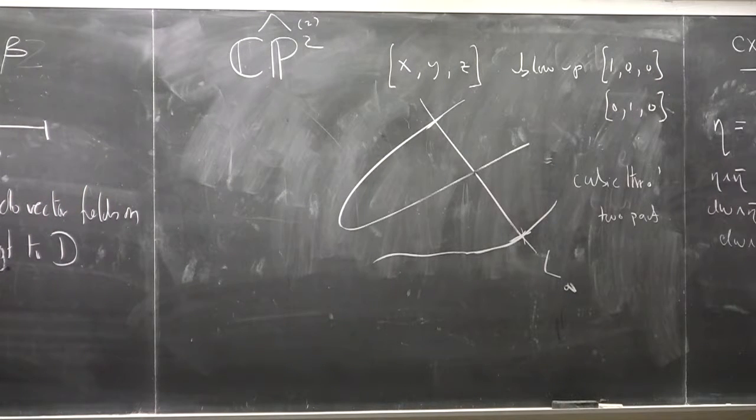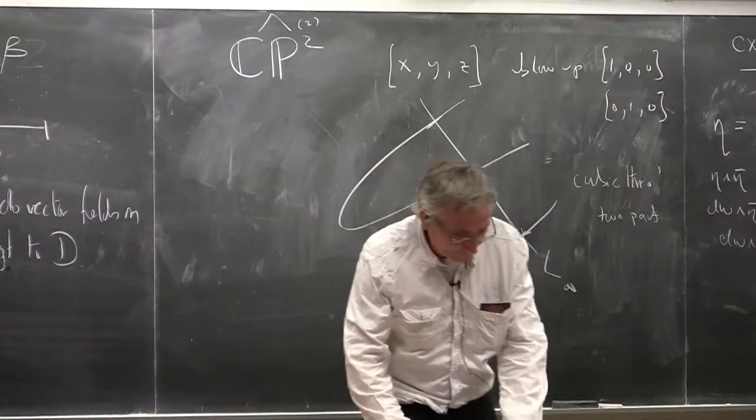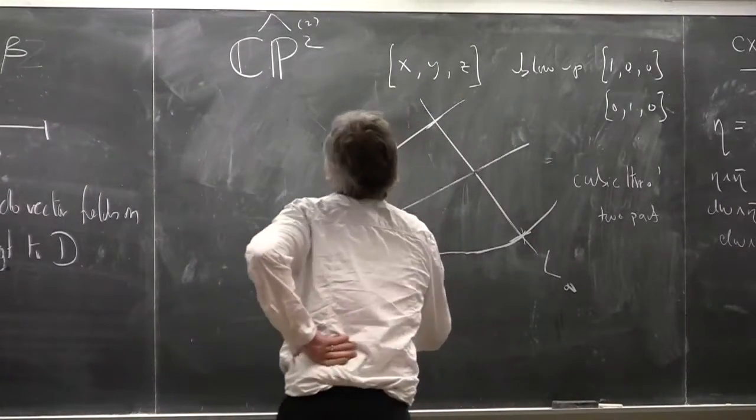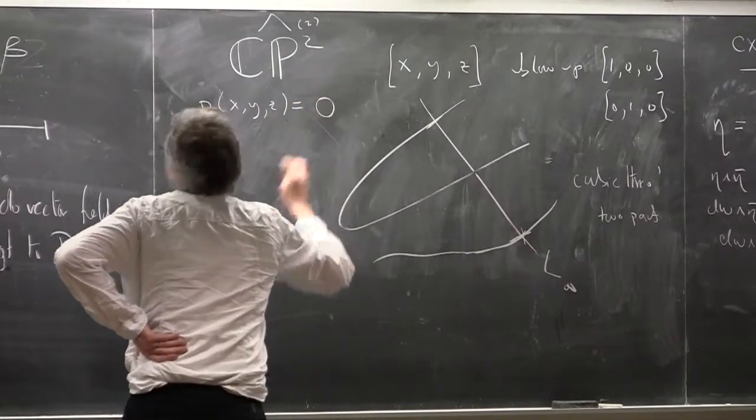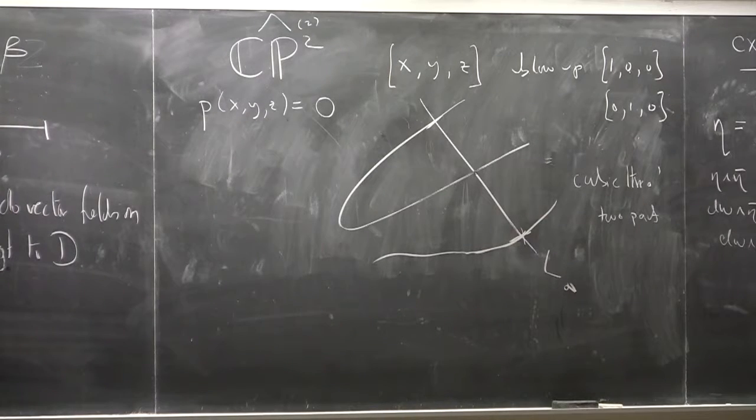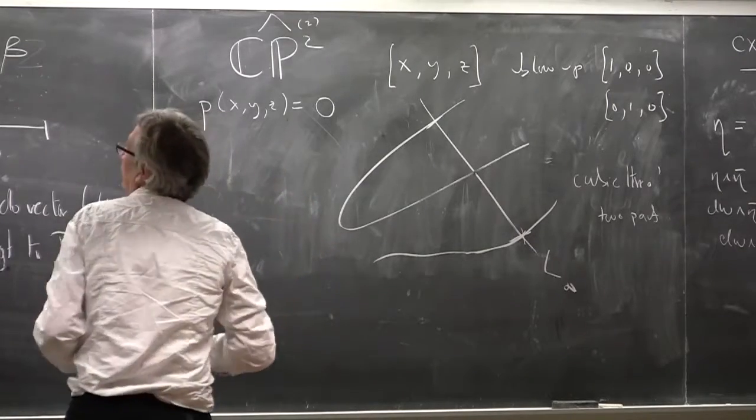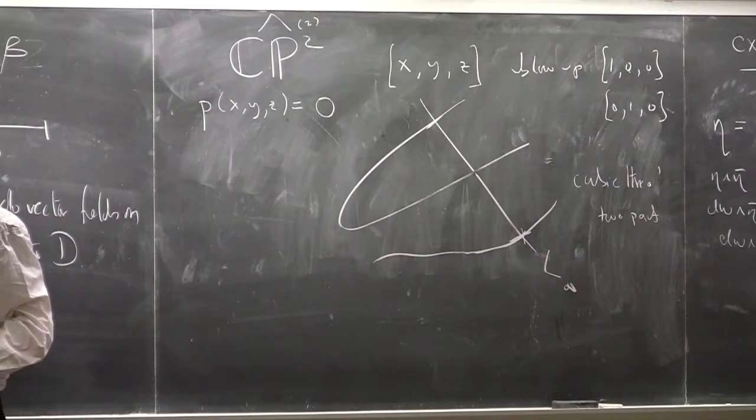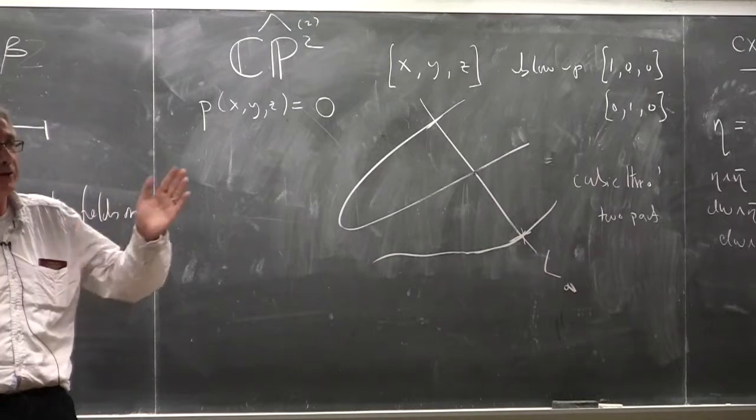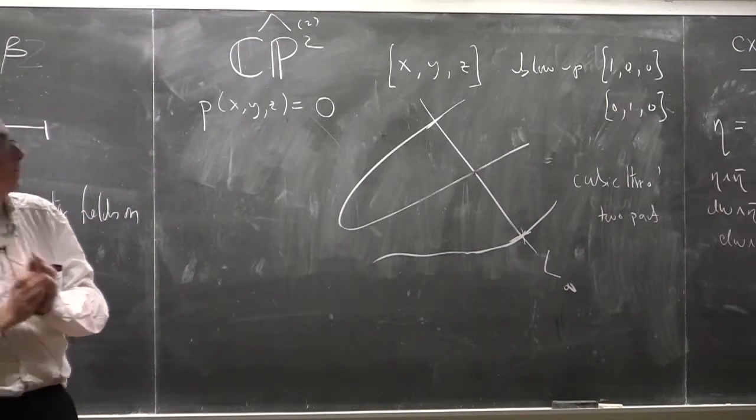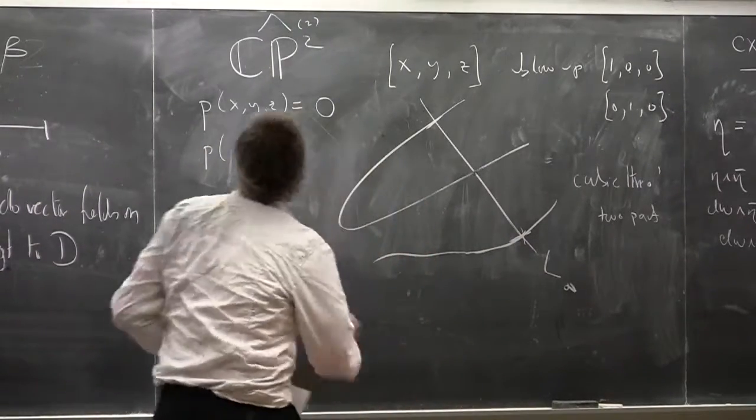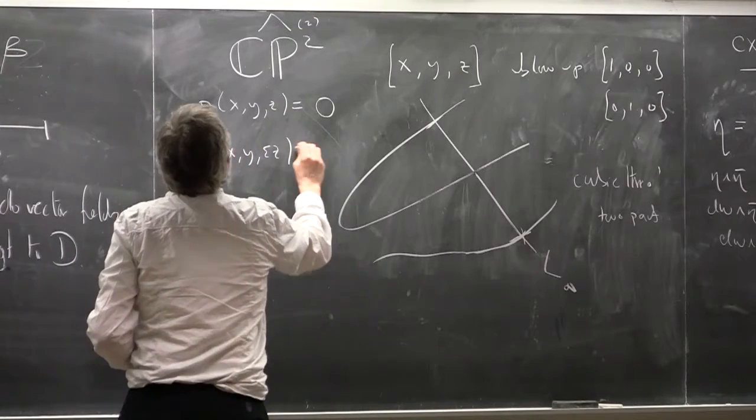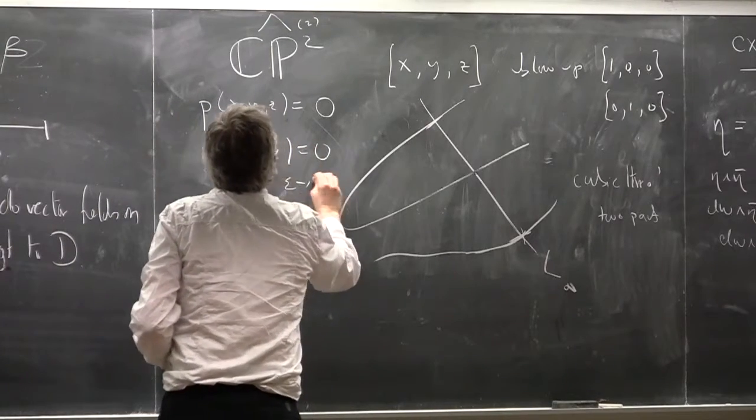Then you can essentially see what happens is that, supposing our cubic is given by the equation P of x, y, z equals zero. Then as you approach the limiting value where you're going to stop, this cubic is going to, in this case the ambient space will stay the same, it's going to be projective space, but what will happen is that the cubic will degenerate into a singular curve according to the fashion P of x, y, epsilon z equals zero, epsilon going to zero.